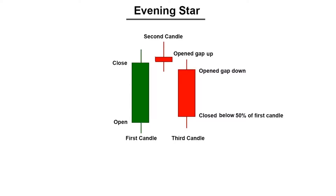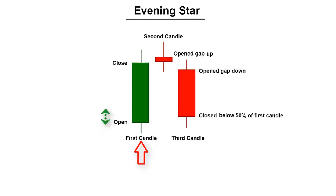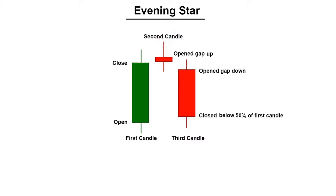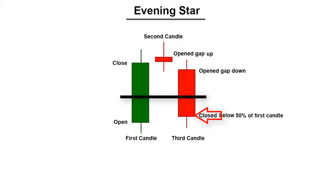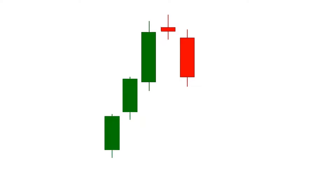The first candle of the evening star pattern is bullish, opening near the low and closing near the high. The first candle must be a medium or large green body, but not very large. The second candle is a short bearish or bullish doji, or a small body candlestick. The third candle is bearish, opening near the high and closing near the low, and must close below the middle of the real body of the first candle. When an evening star candlestick pattern appears at the top of an uptrend, this can be an indication that a reversal trend is going to take place.